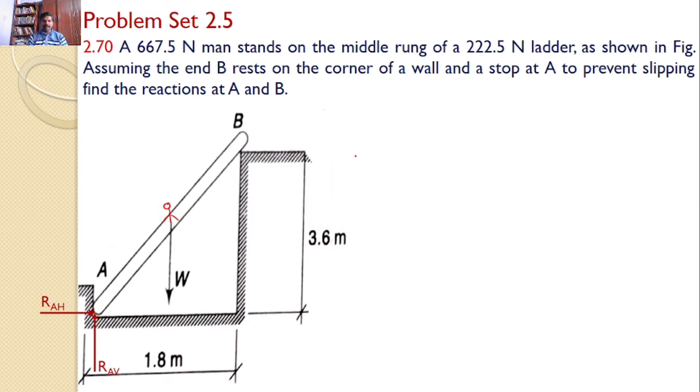The reaction at B is perpendicular to the surface, hence this reaction is R. Let AB make an angle theta with the horizontal. Hence this R, which is perpendicular to ladder AB, makes the same angle theta but with the vertical because these two are perpendicular.